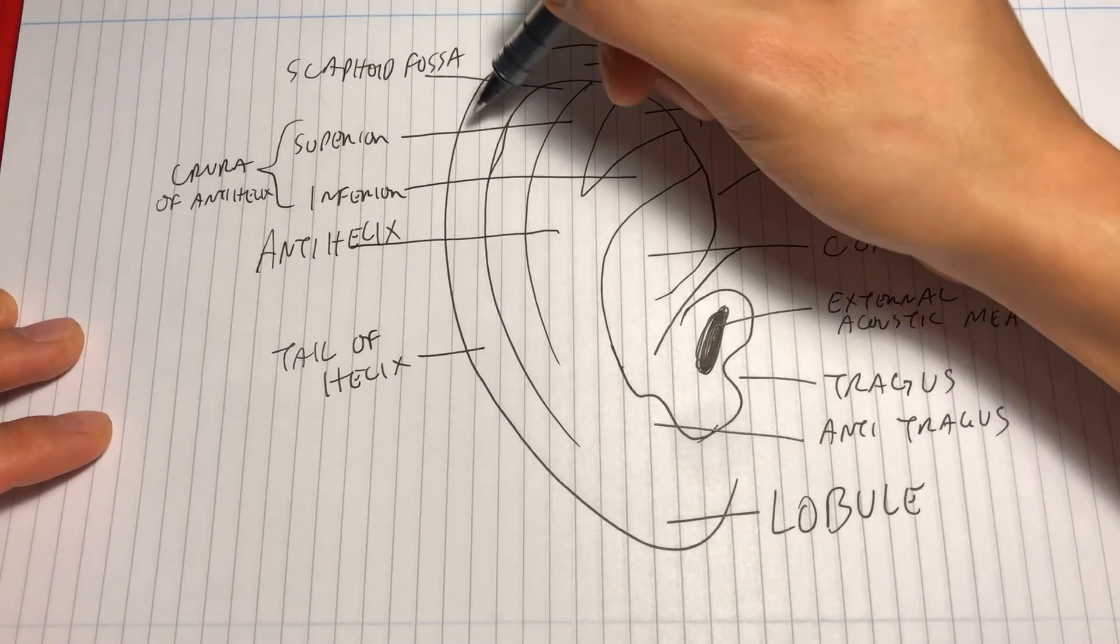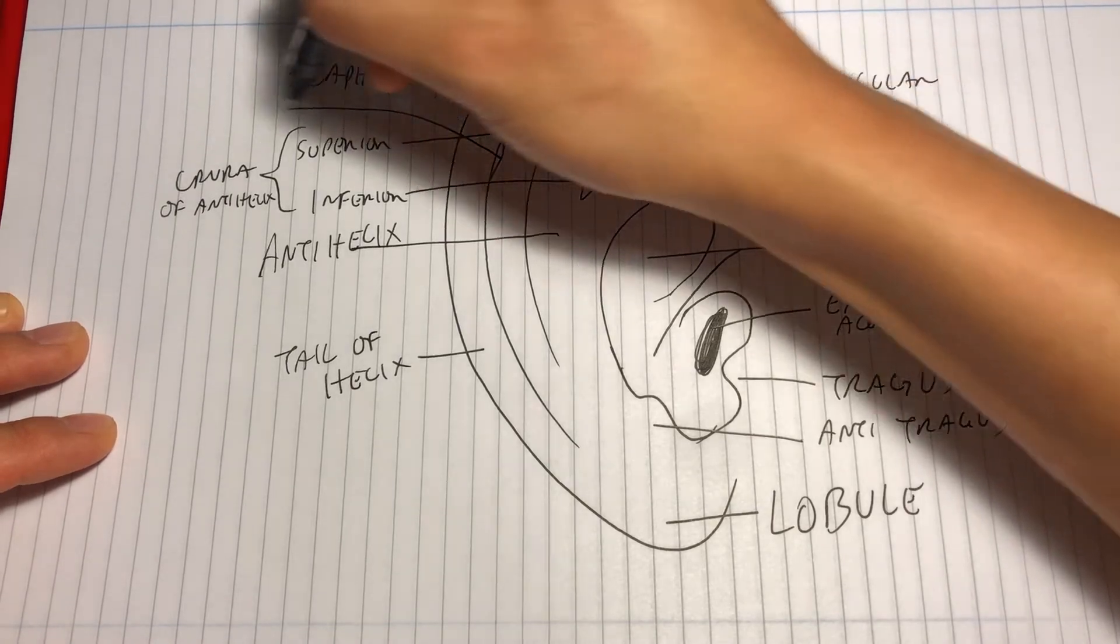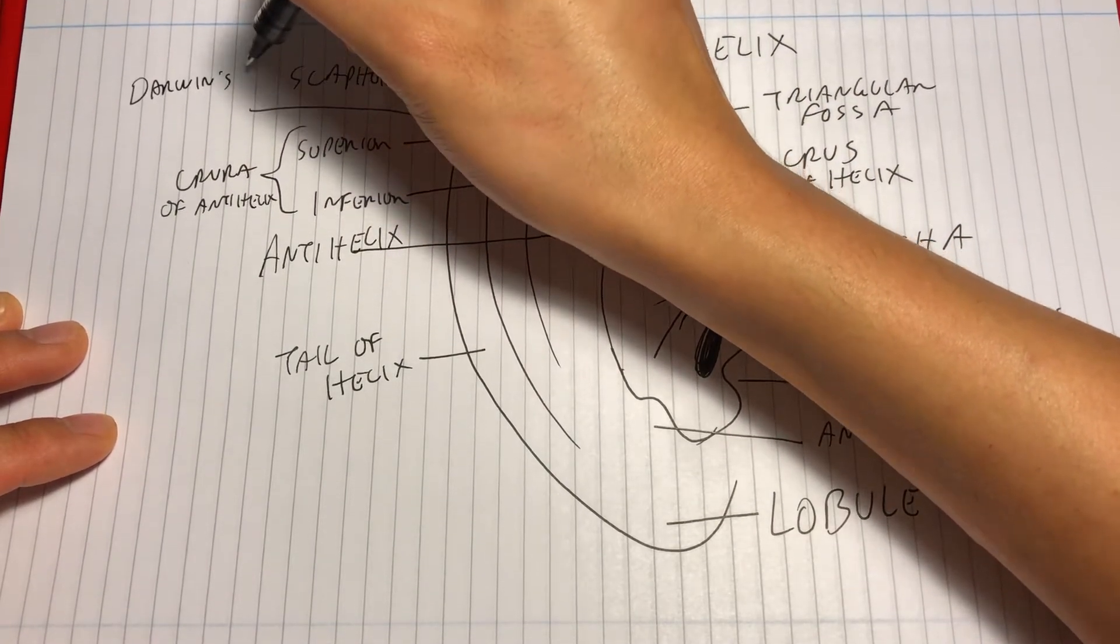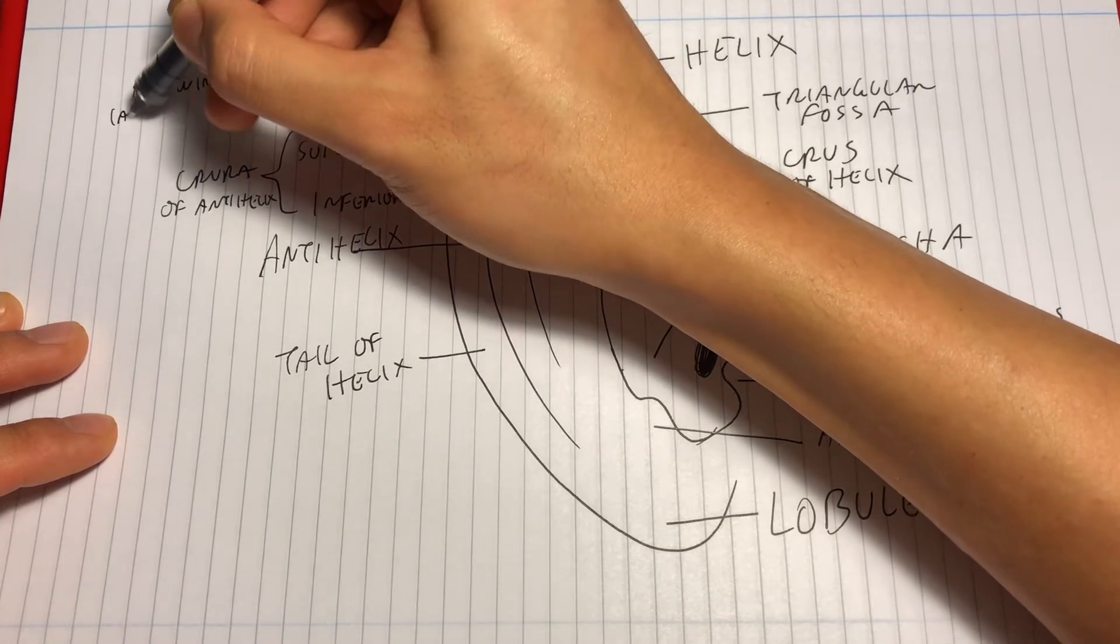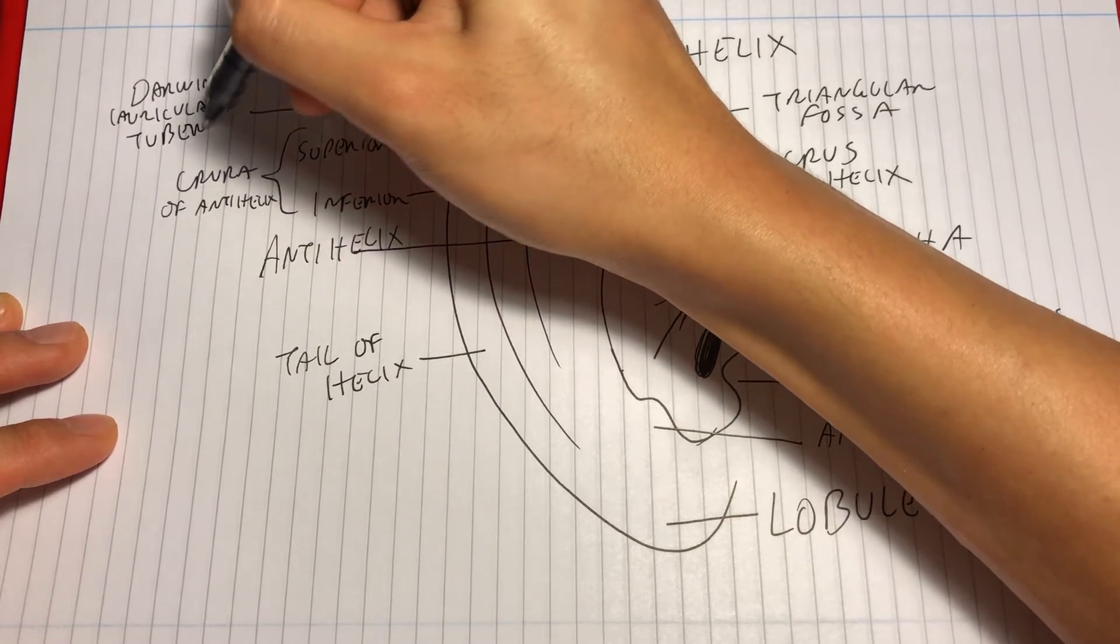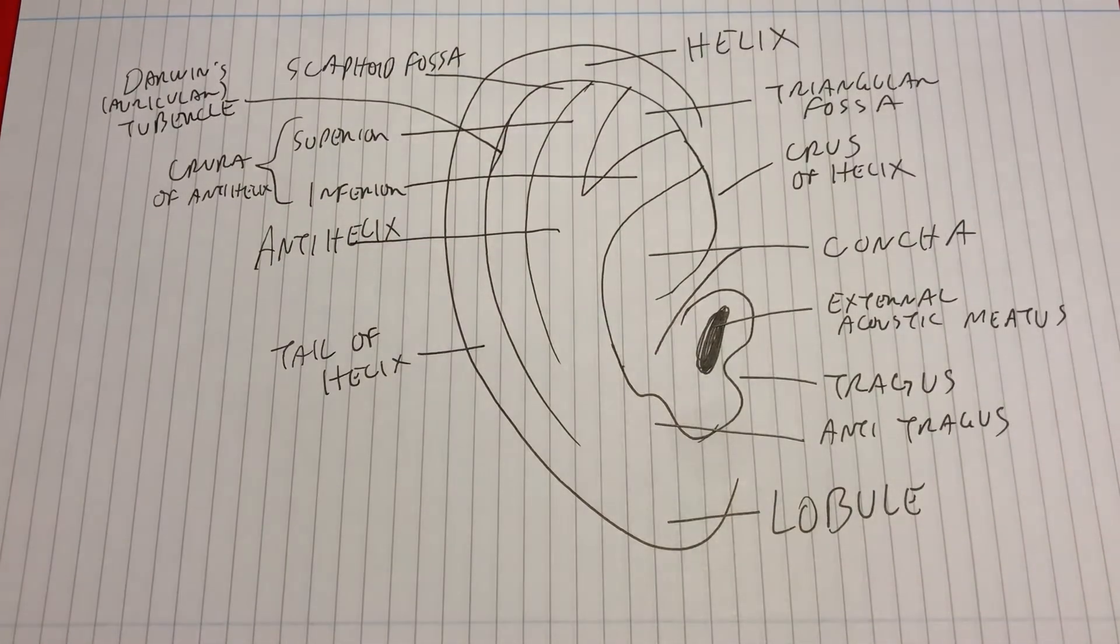For a bonus fun fact, this is the Darwin's or auricular tubercle, which is thought to be a remnant of a prominence that's seen in earlier apes and primates.